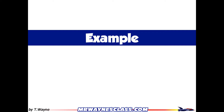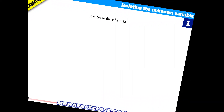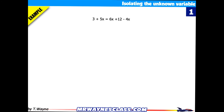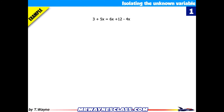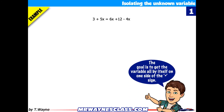This is an example problem of how to isolate for the unknown variable. I'm going to isolate for the unknown. My goal here is to get everything with the variable — or the variable x in this case — on one side of the equal sign. It could be on the left or the right, doesn't matter which side. I'm going to choose the left, as that's typically how I do it.